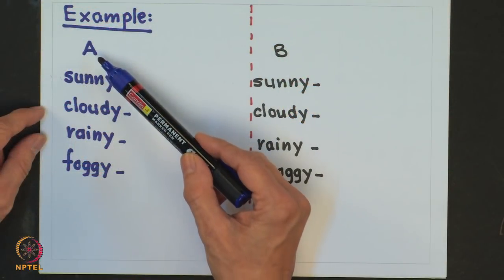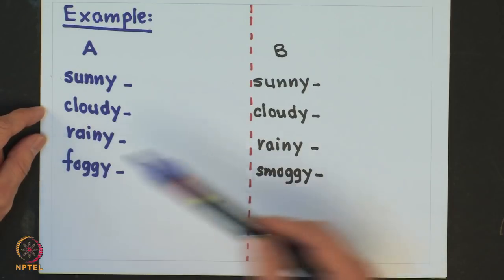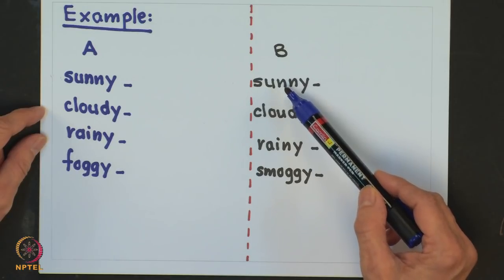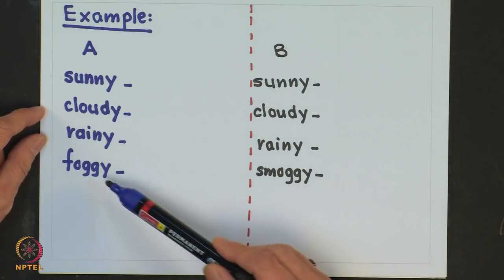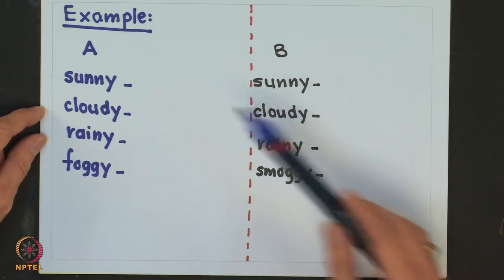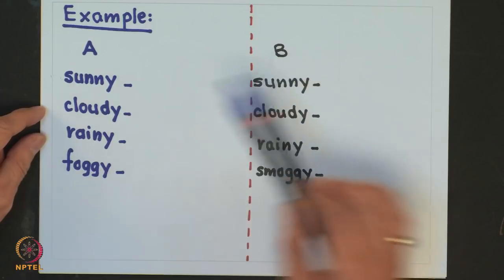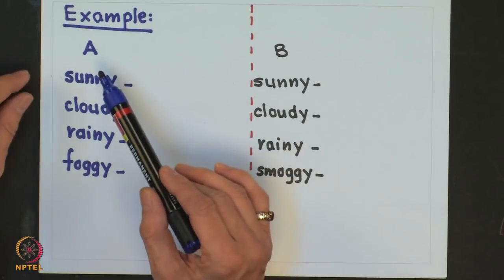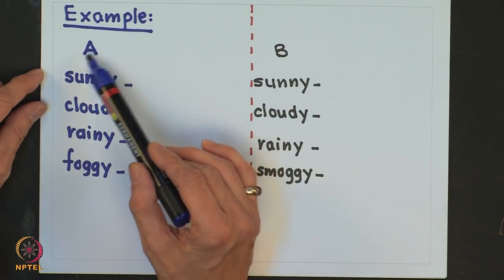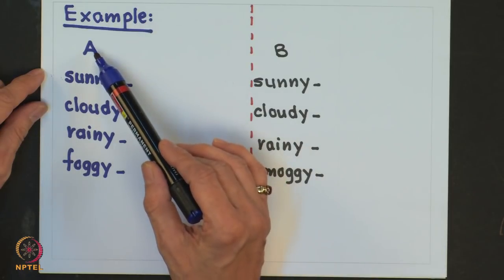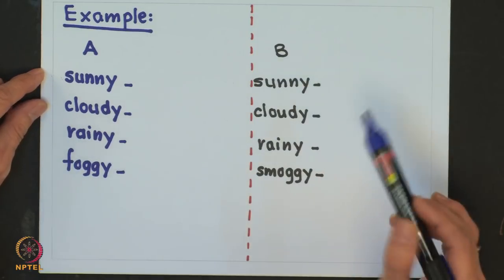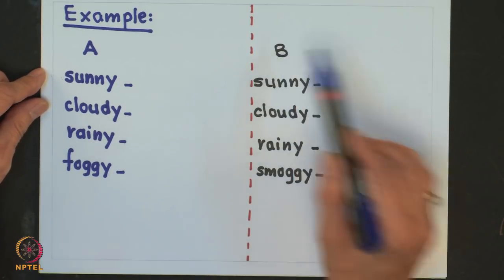Let us see how do we do this. City A has four weather conditions: sunny, cloudy, rainy, and foggy. And city B has four weather conditions: sunny, cloudy, rainy, and smoggy — the only difference being foggy versus smoggy. From the communication perspective both these cities generate four messages. Let us take the transmission of the weather condition from city A to a headquarter weather station located in city C, and similarly we will do for transmission of messages from B to C.